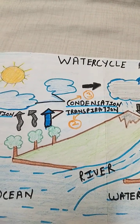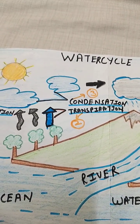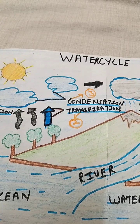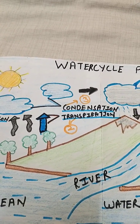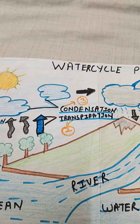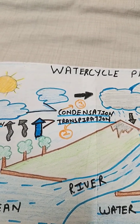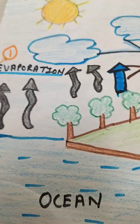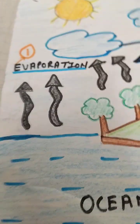Hello everyone, today I'm going to explain the water cycle in a simple way. The water cycle describes how water evaporates from the surface of the earth, rises into the atmosphere, cools and condenses into rain or snow in clouds. There are five processes which describe the water cycle.